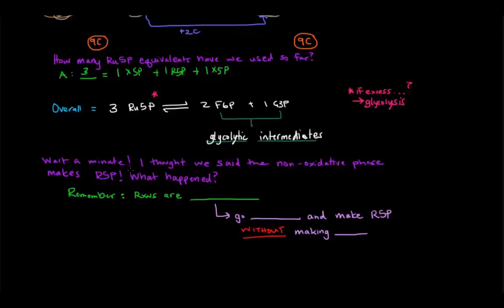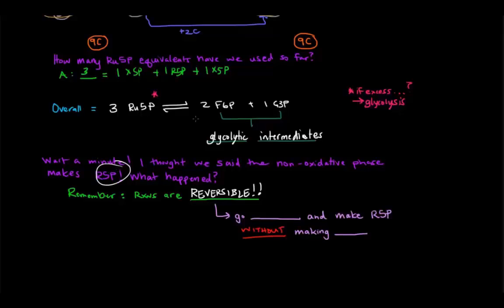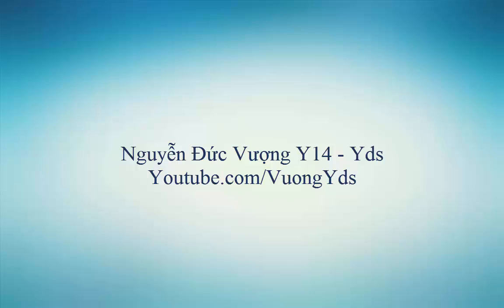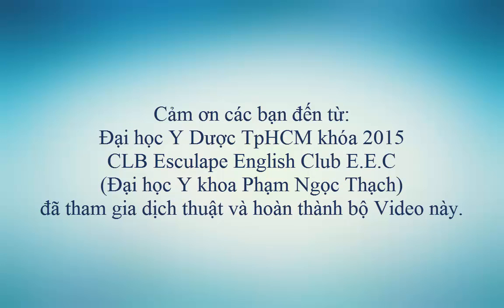But wait — we said in the previous video that the non-oxidative phase makes R5P when NADPH is not needed. Why did we create F6P and G3P instead? Remember: the reactions are reversible. If we have F6P and G3P, we can run the pathway backwards and create Ru5P and R5P without making NADPH, since none of the non-oxidative phase steps involve NADPH or NADP+. Hope that video was helpful. We'll see you next time.